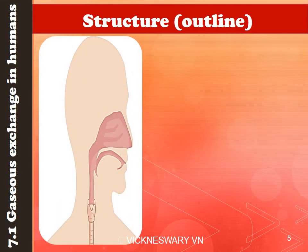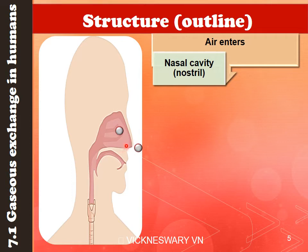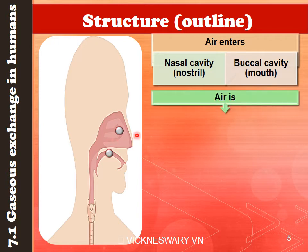Since we have looked at the physical structure of the respiratory system, we move on to discuss the movement of air into the respiratory system. Air can enter either through the nostril into the nasal cavity, or into the buccal cavity through your mouth. The space in the mouth region is the buccal cavity, and the space at the nose region is the nasal cavity. Once air is present in these two cavities, three things happen to it.